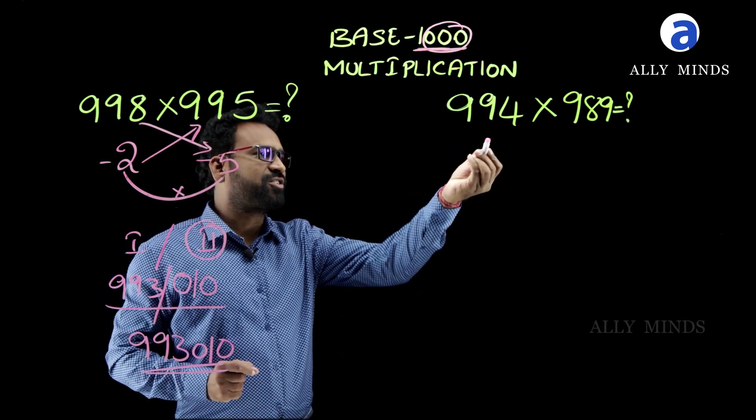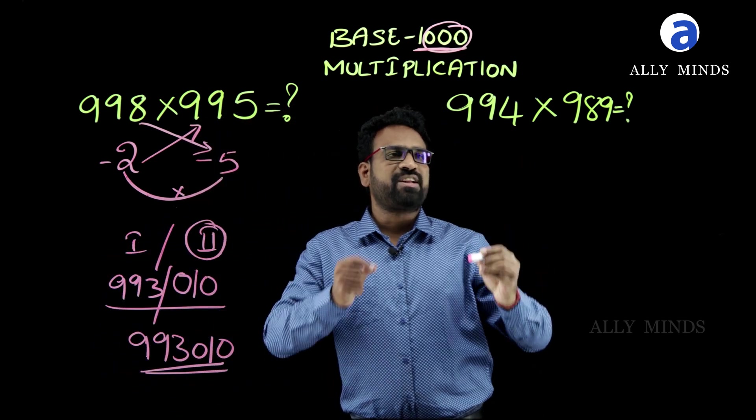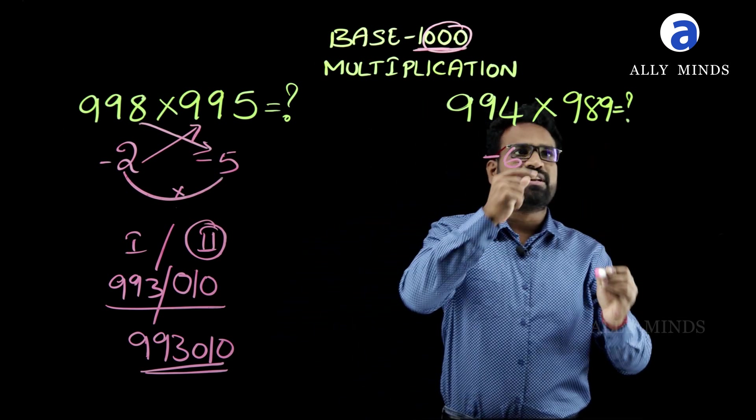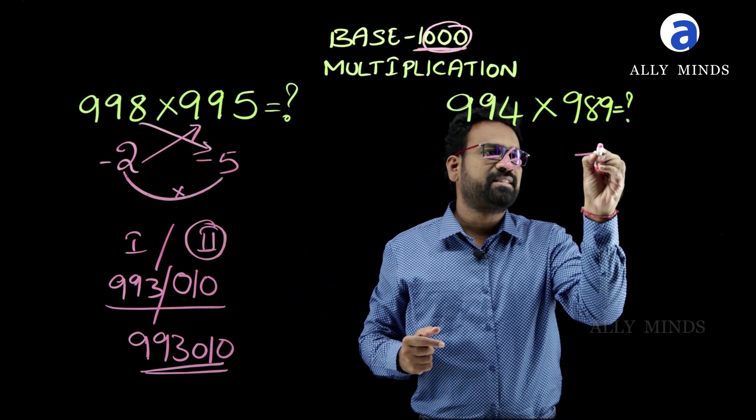See how simple it is. Now let us solve this problem. Here, the difference between 994 and base 1000 is 6, and the difference between 989 and base 1000 is 11.